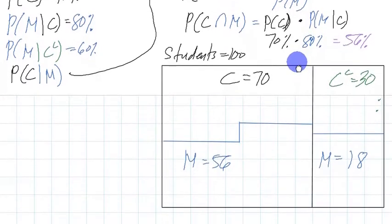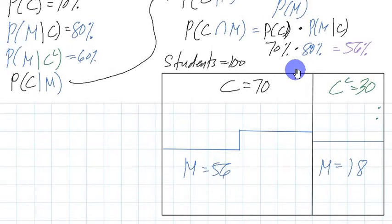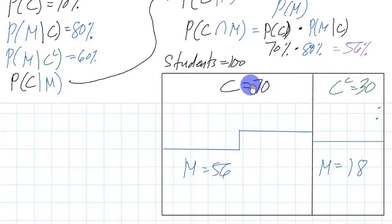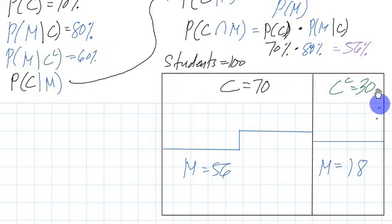We resolved to illustrating it using percentages, benchmarking on 100 students. We had that 70% of students carry a cell phone, and out of that 70%, 80% carry an mp3 player, which is 56%. The probability of a student not carrying a cell phone is 30%, and of that 30%, 60% carry an mp3 player, giving us 18%.